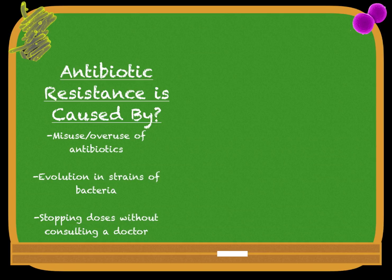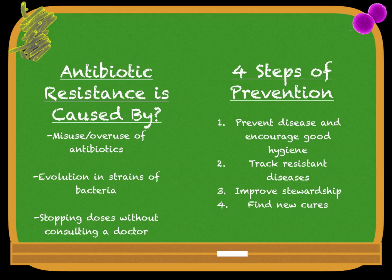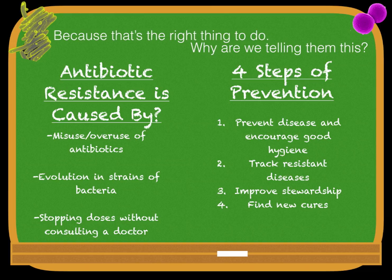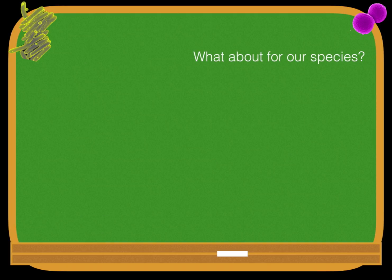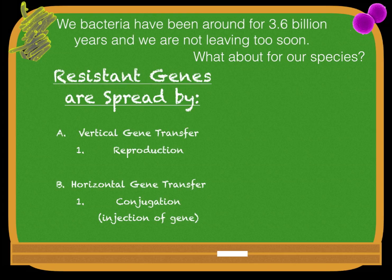Antibiotic resistance is caused by: misuse or overuse of antibiotics, evolution and strains of bacteria, and stopping doses without consulting a doctor. Four steps of prevention are: prevent diseases and encourage good hygiene; track resistant diseases and improve stewardship; and find new cures. Why are we telling them this? Because it's the right thing to do. We bacteria have been around for about 3.6 billion years, and we are not leaving too soon.